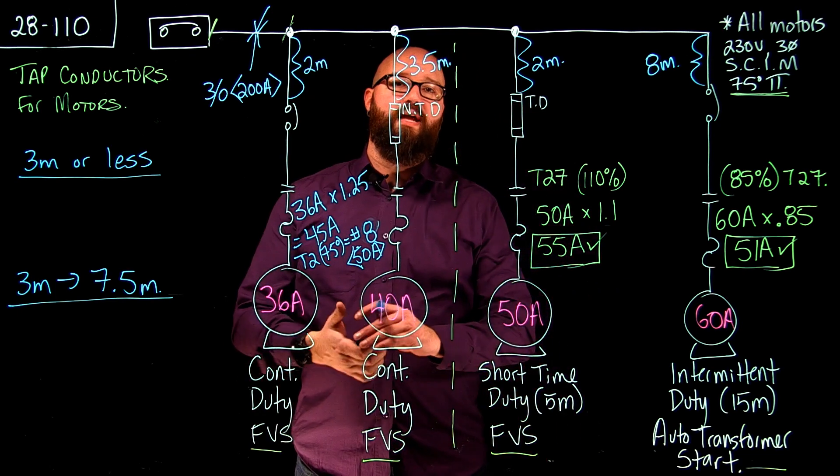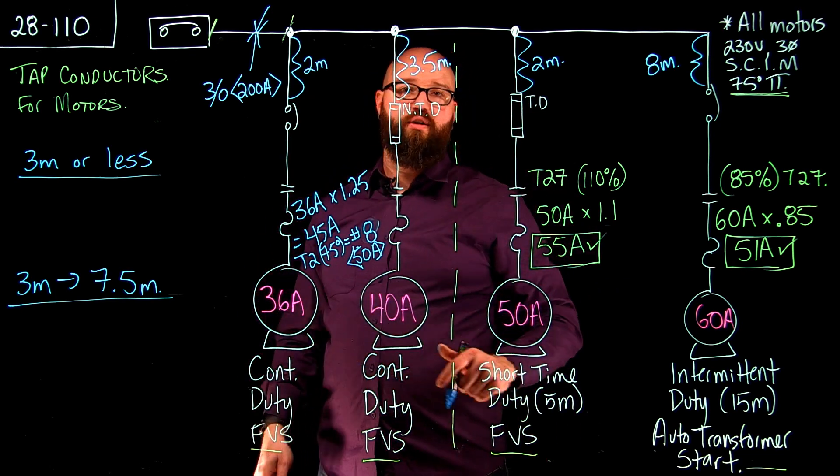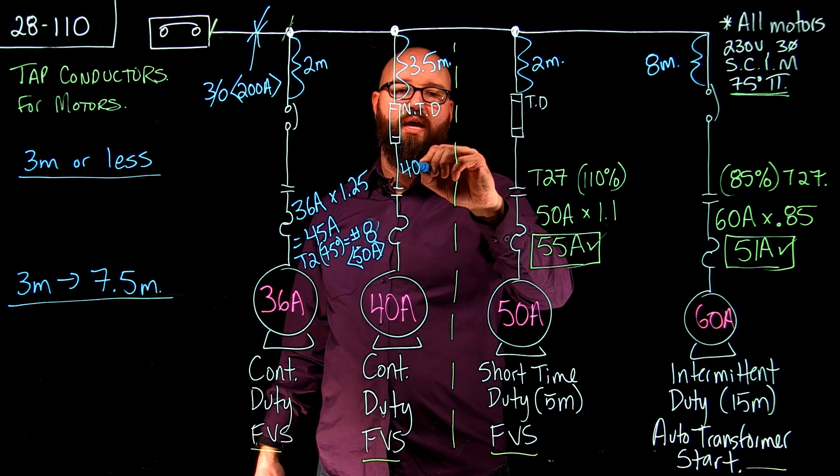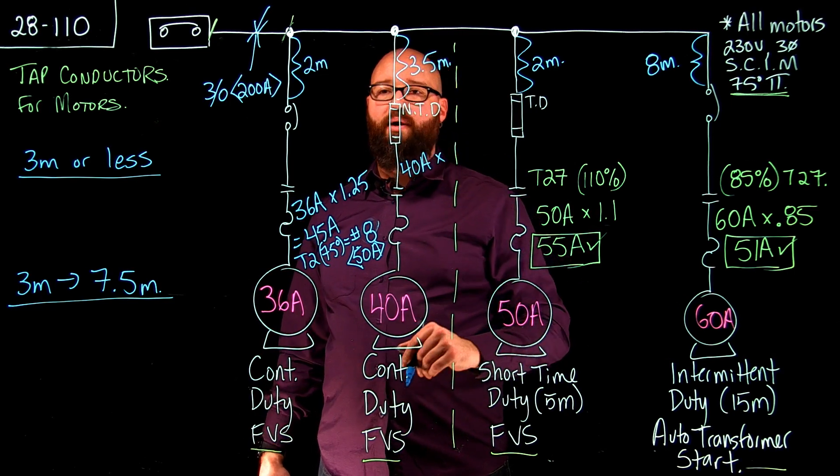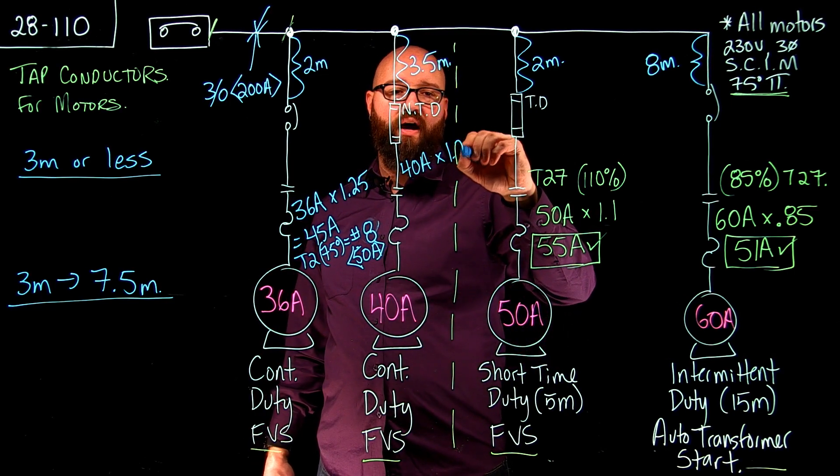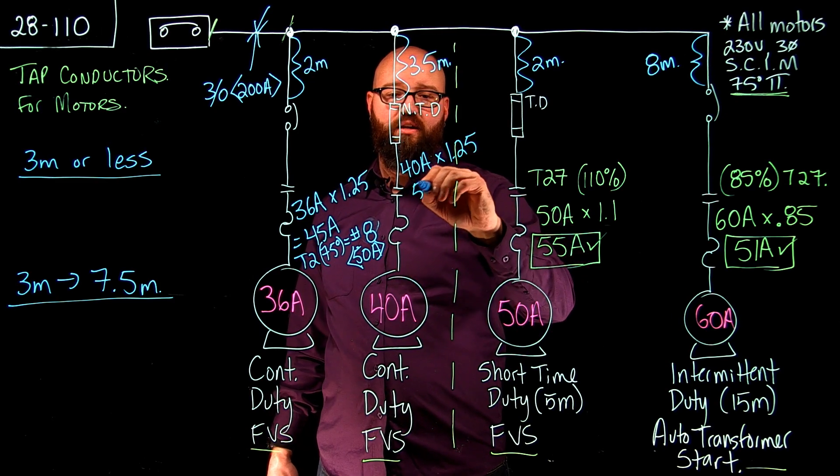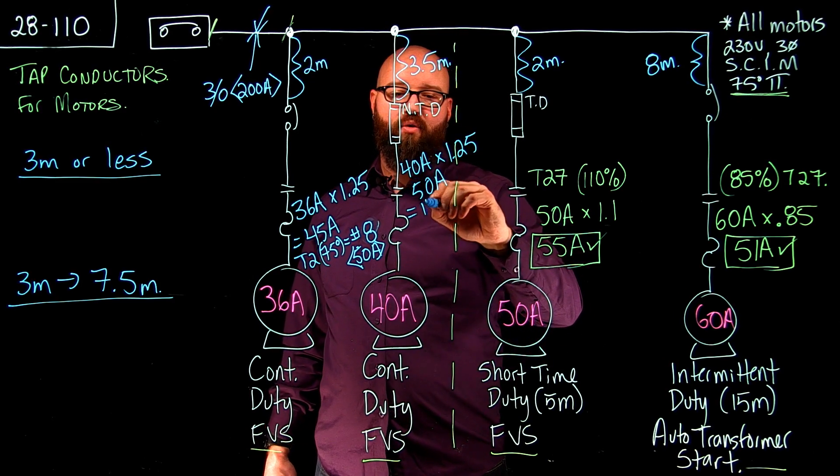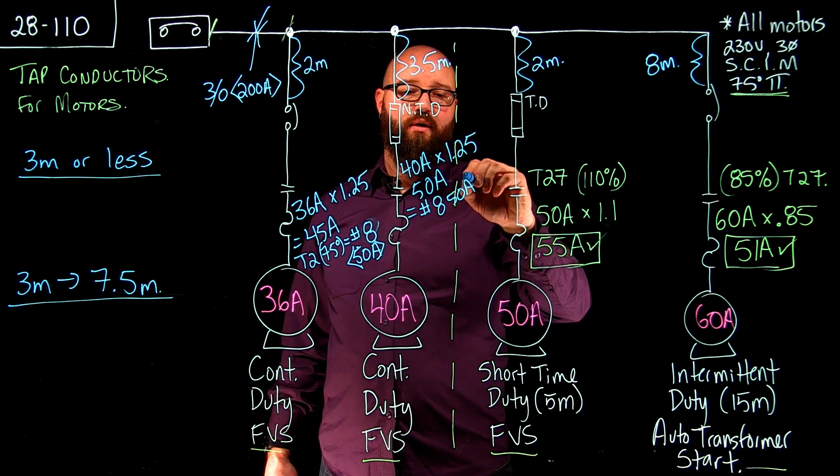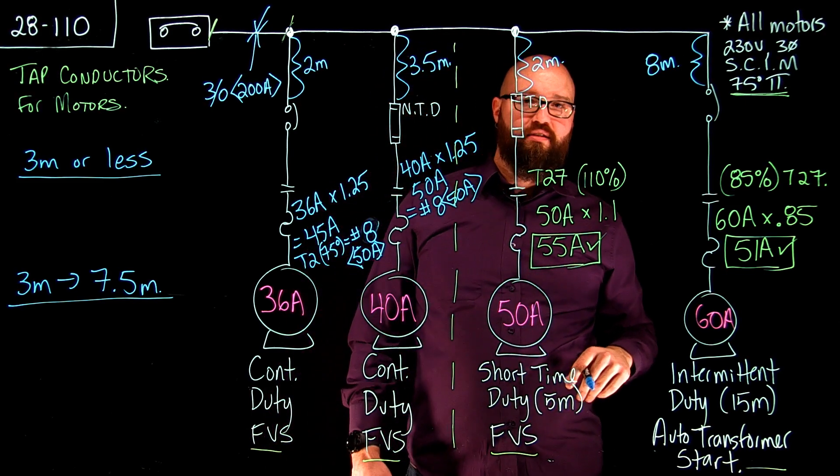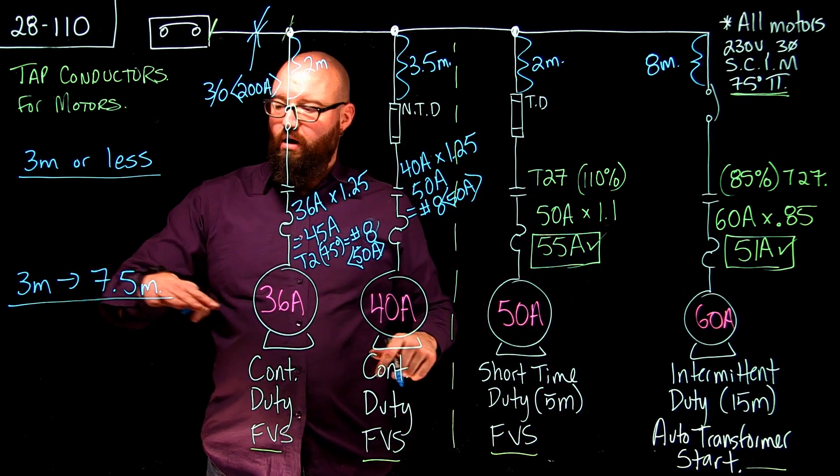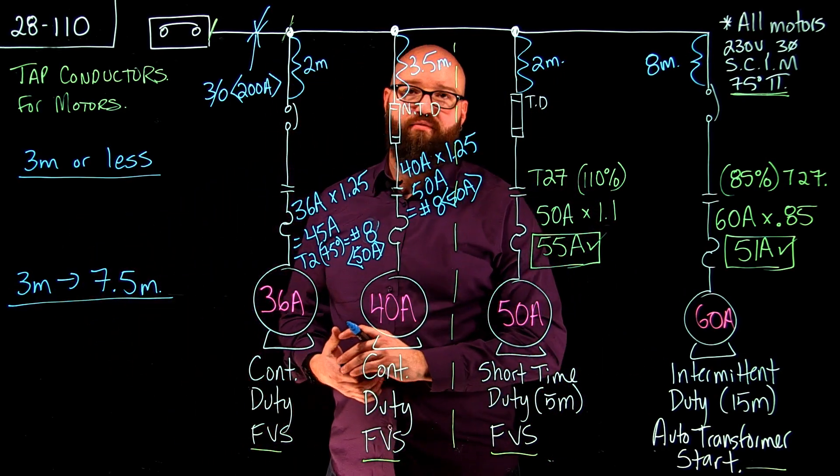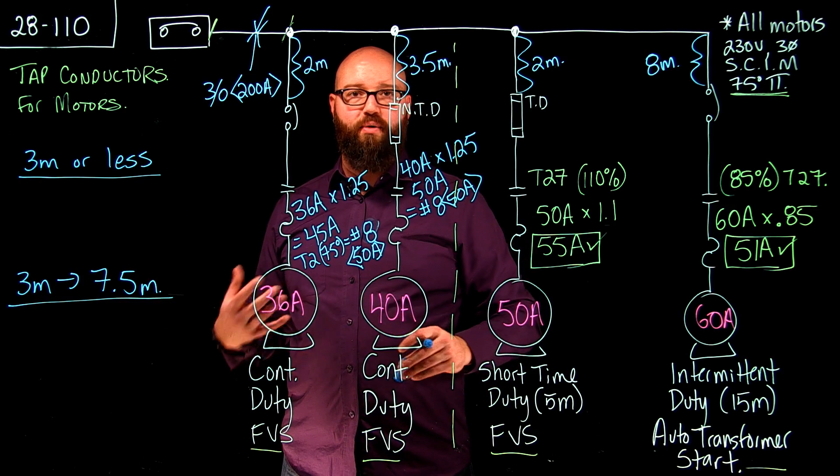On to my 40 amp FLA continuous duty we're going to do the same thing because it's a continuous duty we're going to take 40 amps multiply it by 1.25 which gives us 50 amps. Now again that tells me we would go with a number 8 gauge good for 50 amps but there's one thing we need to keep in mind.